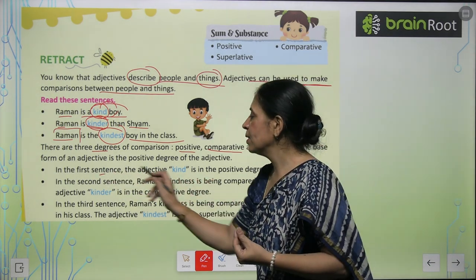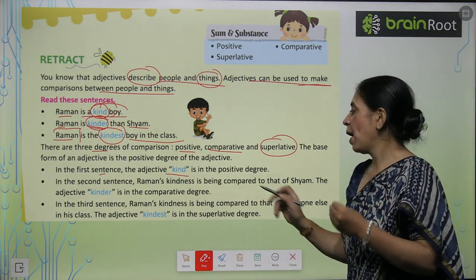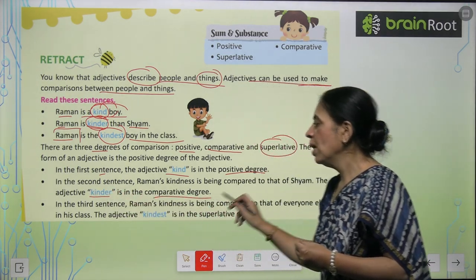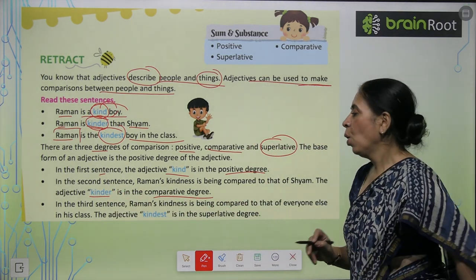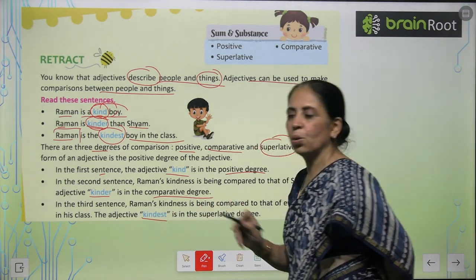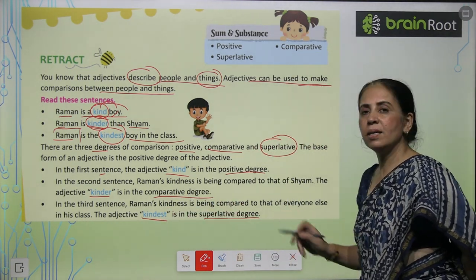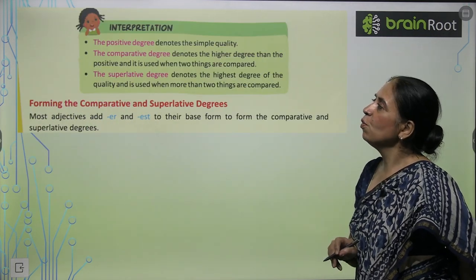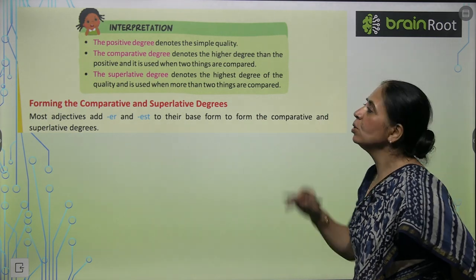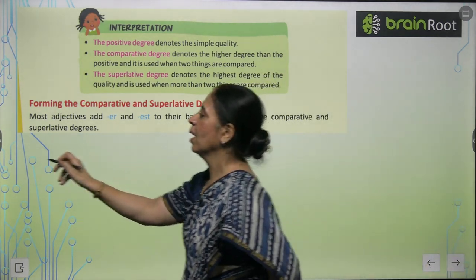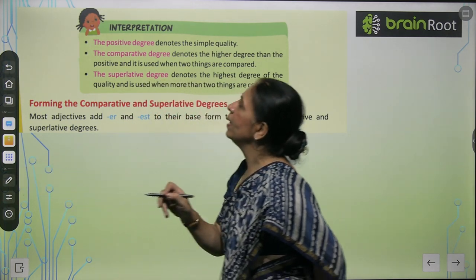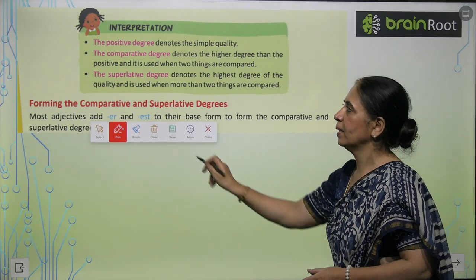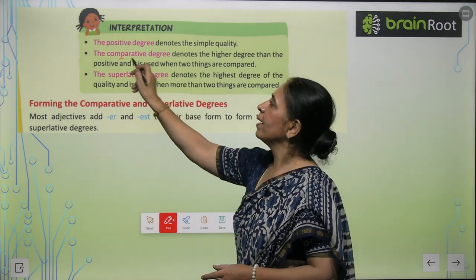When we used 'kind,' that was the positive degree. When we used 'kinder,' that was the comparative degree. And when we used 'kindest,' that is the superlative degree. So the positive degree explains a simple quality, the comparative degree is a slightly higher level than the positive degree.